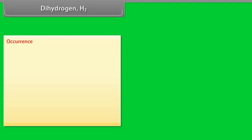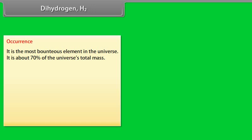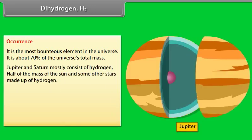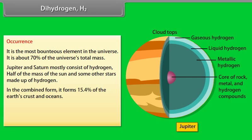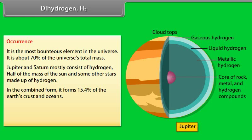Dihydrogen H2 Occurrence. Dihydrogen is the most bounteous element in the universe. It has about 70% of the universe's total mass. Jupiter and Saturn mostly consist of hydrogen. Half of the mass of the sun and some other stars made up of hydrogen. In the combined form, it forms 15.4% of the Earth's crust and oceans. Earth does not have enough gravitational pull to retain the light hydrogen molecule, so it is not found in our atmosphere.